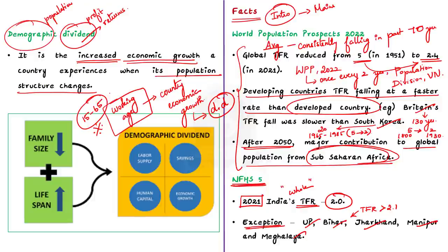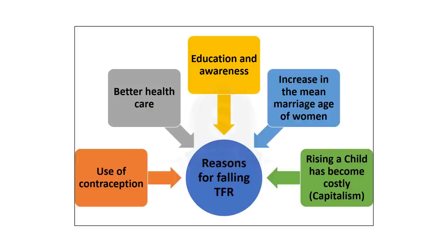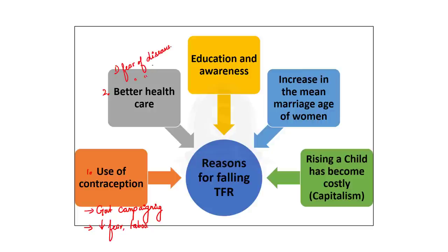Let us see the reasons for falling TFR in India. The first reason is the increased use of contraception — due to persistent government campaigning, the taboo and fear around contraception has reduced. The second reason is better healthcare. In the previous generation, people used to have more kids fearing some children may die due to low availability of healthcare or unprecedented diseases, but now we have better healthcare.